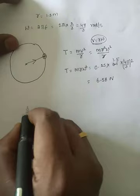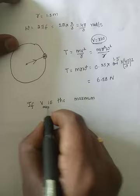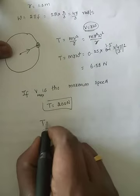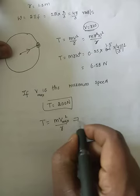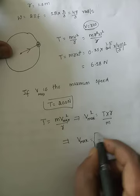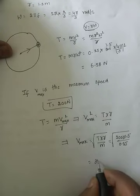For the maximum speed, the tension the string must withstand is 200 newtons. The formula is T = m·v_max²/r, so v_max² = T·r/m, and v_max = √(T·r/m) = √(200 × 1.5 / 0.25) = 34.64 meters per second.